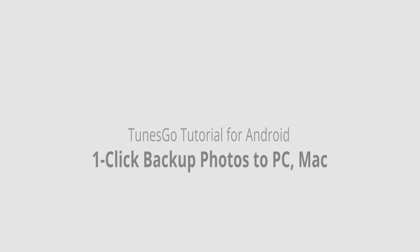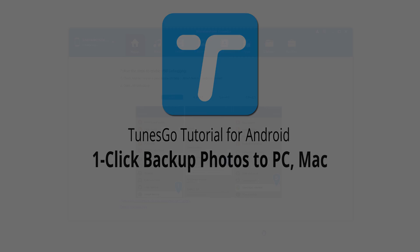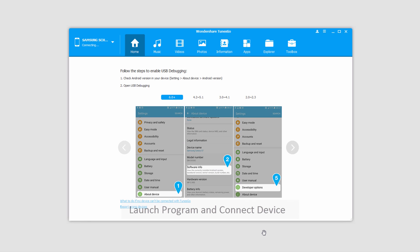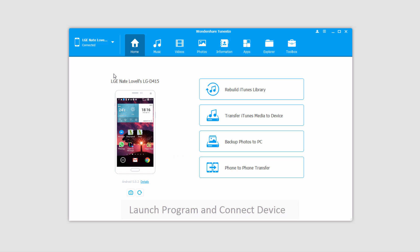Hello everyone, in this video I'll be showing you how to backup your photos to your PC or Mac in one click, using Wondershare TunesGo. The first step is to go ahead and launch Wondershare TunesGo, and after that we're going to connect our Android device. It's then going to connect and sync it with the program for us.